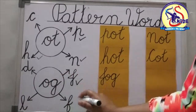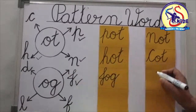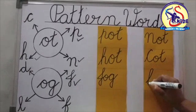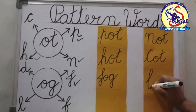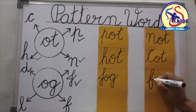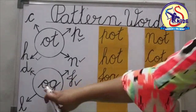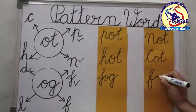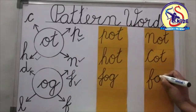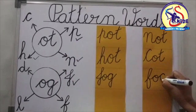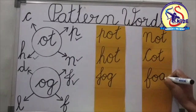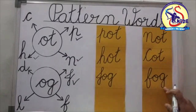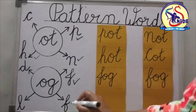Now see the next letter: F is given. Now our pattern is O-G. We will get the word F-O-G, fog.